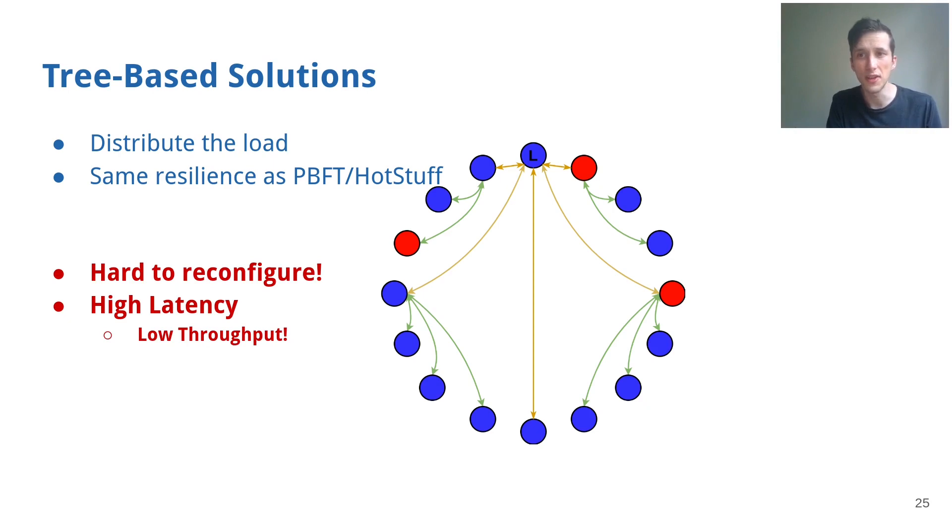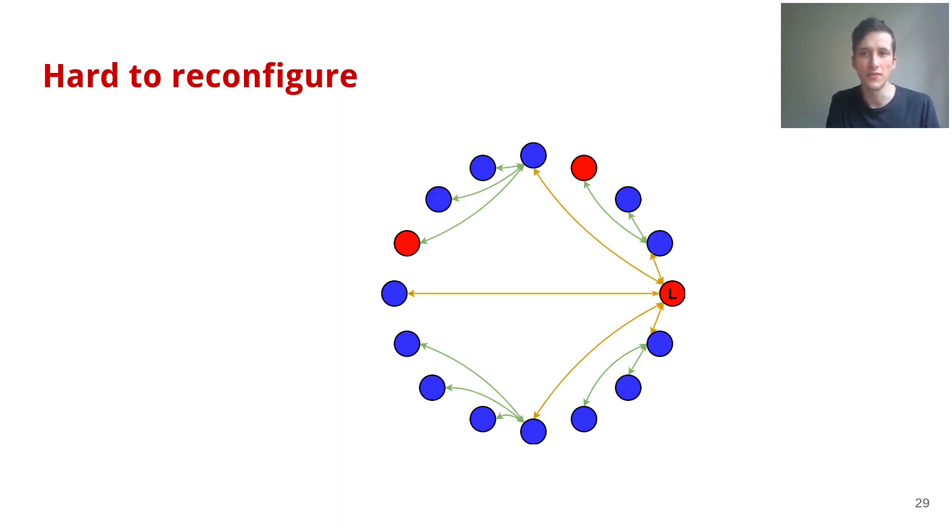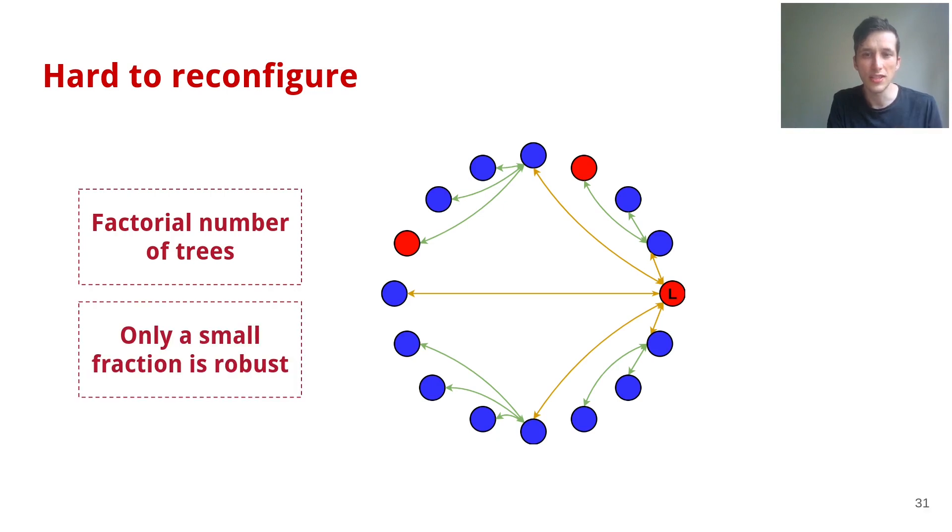Trees have a much higher inherent latency than stars, even resulting in low throughput in a geographically distributed setting. In the case of a failure, it is not enough to just switch the leader, as there is a high possibility that even after F attempts, no robust configuration is found because there's always either a faulty internal or root node. This is especially complicated, as there is a factorial number of trees, where only a small fraction of those is robust.